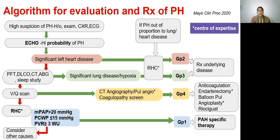If group 2 and group 3 are negative, proceed to do a VQ scan. If it is positive, do angiography along with a coagulopathy screen, which could lead to the diagnosis of group 4 pulmonary hypertension. Here, the patient needs to be on lifelong anticoagulation. Pulmonary endarterectomy or balloon pulmonary angioplasty is the treatment of choice. Where intervention is not possible, treatment with riociguat is indicated.